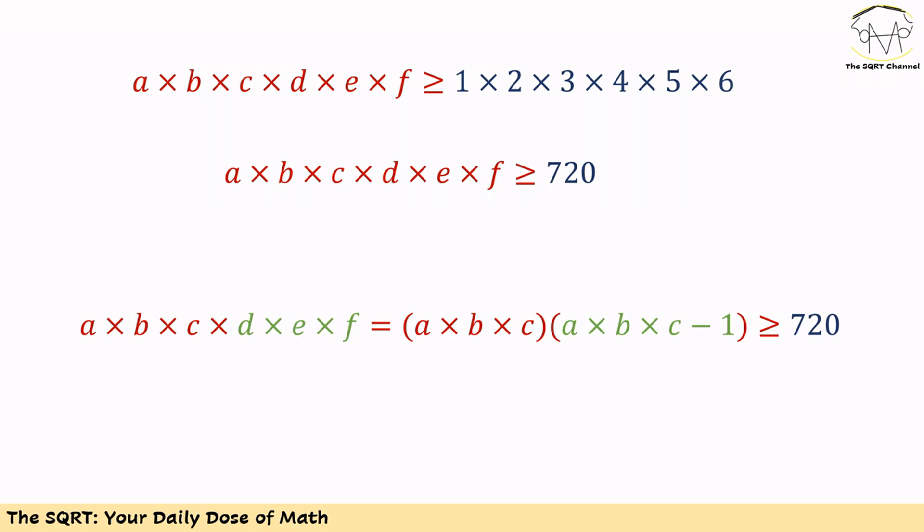So we have the product of A to F is going to be greater or equal to 720, and remember the product of D to F is equal to the product of A to C minus 1. So we are going to use that and now we have an inequality that we are going to simplify.